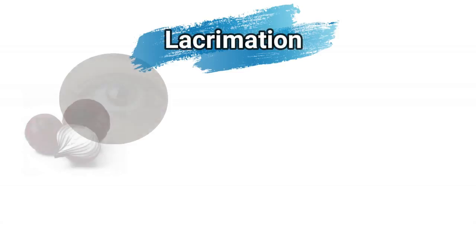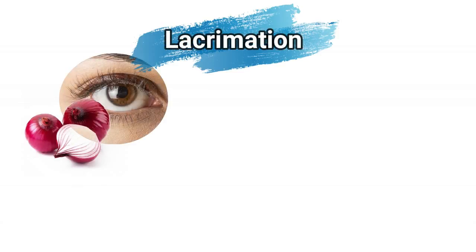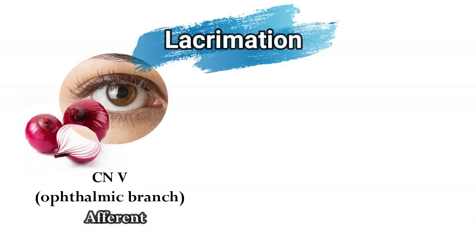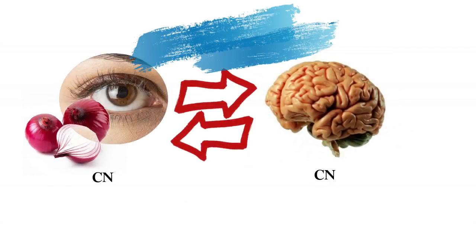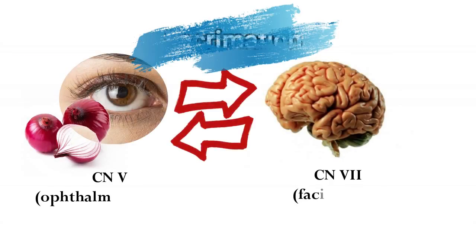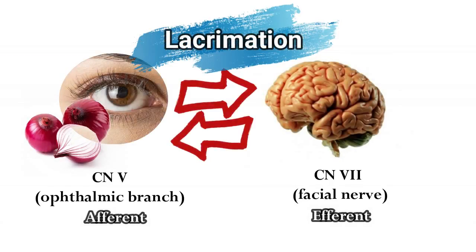So first we'll be talking about lacrimation. Lacrimation, as we all know, is tearing. For example, if you have some onions in front of you, this will irritate the fifth cranial nerve, which is the ophthalmic branch of the trigeminal nerve supplying the sensory area of the eye. So the afferent going to the brain is the fifth cranial nerve, the trigeminal nerve, and the nerve coming back to cause the tearing is the seventh cranial nerve, the facial nerve.